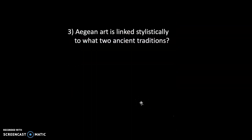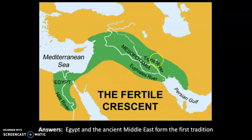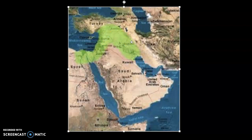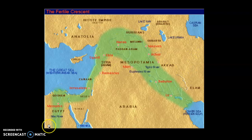The Fertile Crescent — this whole area here — you've heard that term in history classes. This was like the center of the universe for Western culture at the time, because of all these rivers: the Tigris and Euphrates. And there was a kind of land bridge, and then you had the Nile. But they didn't get along too well.